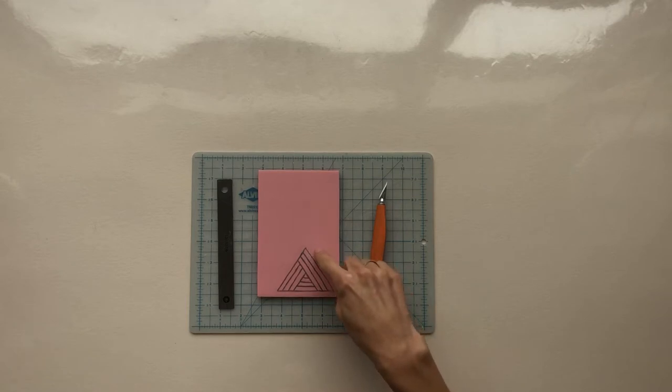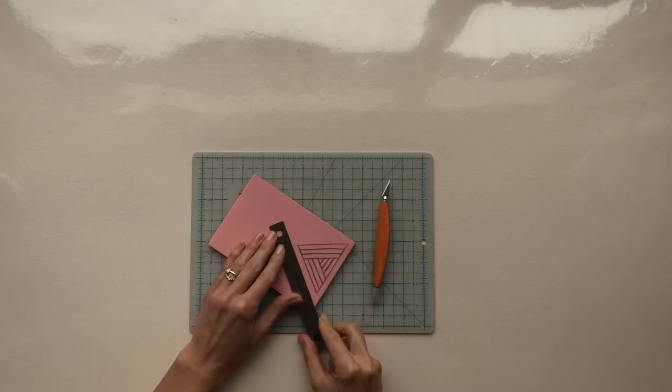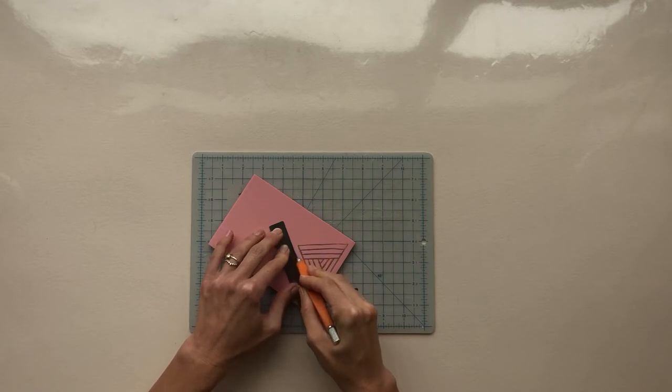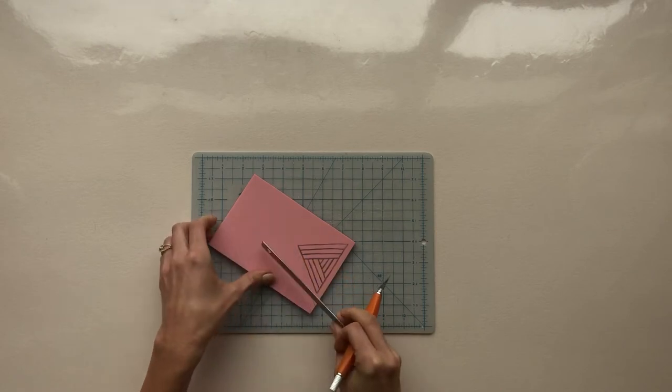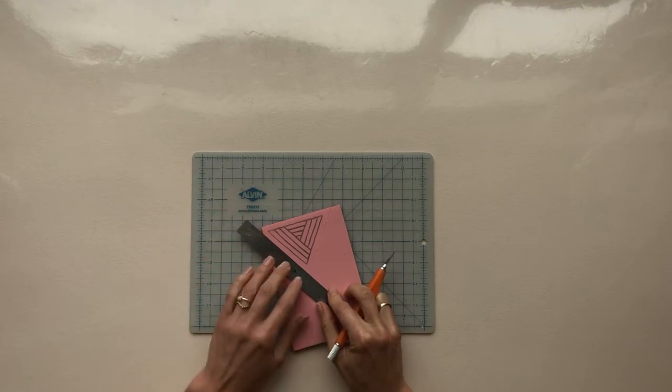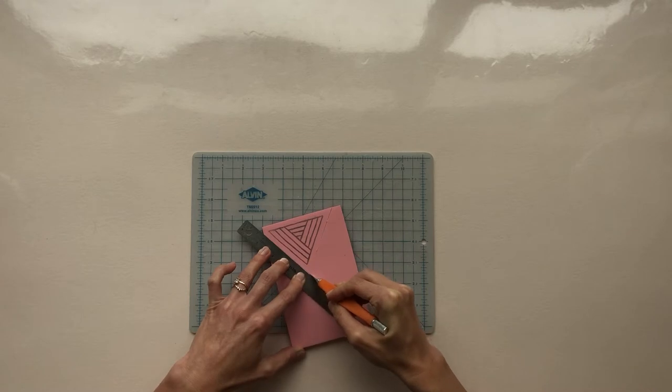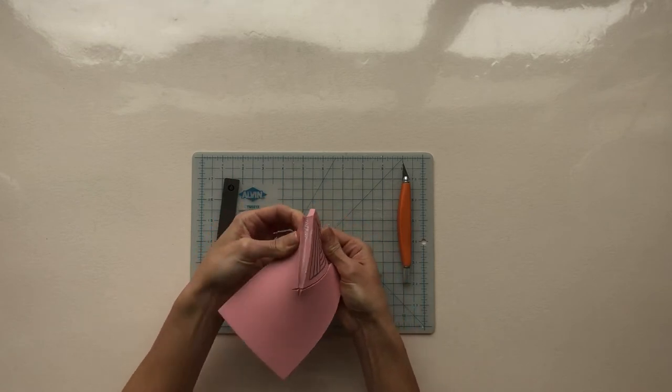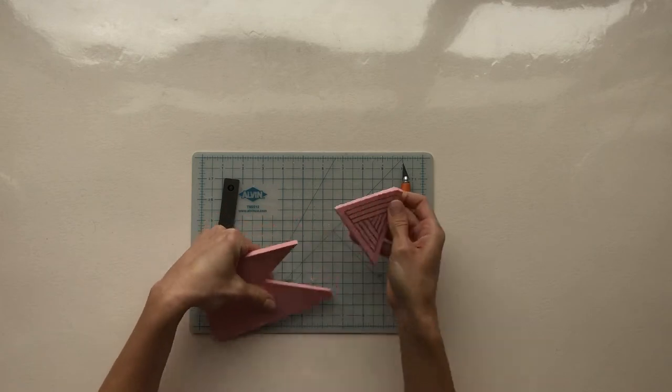So before I start carving I'm going to actually cut around my design so I have a smaller piece to work with. Then I am going to use a ruler for this because I just like a clean border. I'm leaving about a quarter inch. And I'm just, I'm not actually cutting, you can cut all the way through with this or you can even score it and then kind of pull it apart. So that's not quite all the way through but the block splits pretty easily. So I'm just kind of folding back that edge to break the rubber.